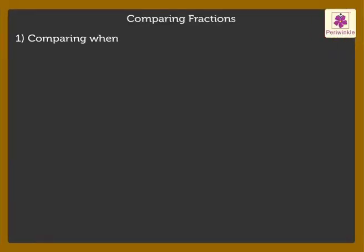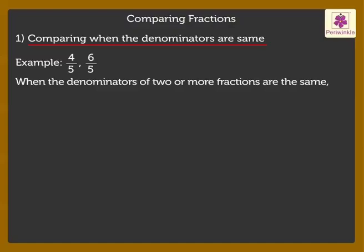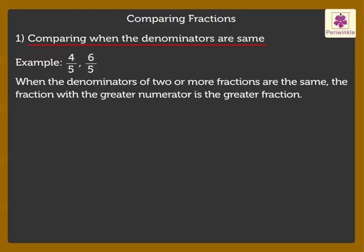Comparing when the denominators are same. Look at these fractions. When the denominators of two or more fractions are the same, the fraction with the greater numerator is the greater fraction. Hence we can say that 4 upon 5 is less than 6 upon 5, or 6 upon 5 is greater than 4 upon 5.